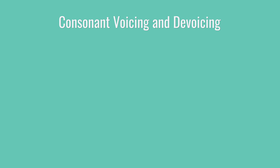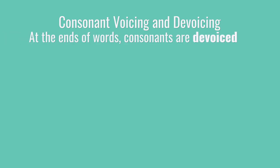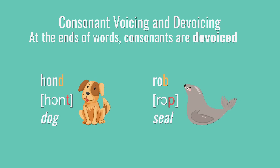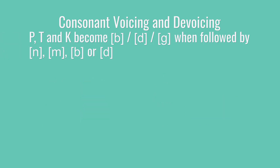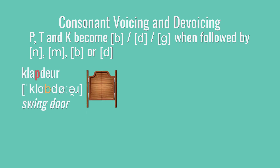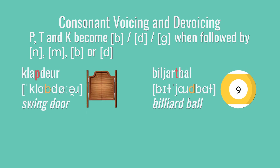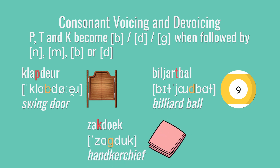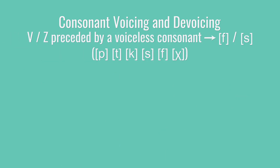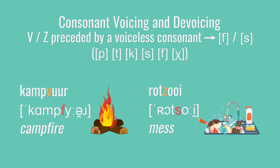And with that, we are all done with Dutch pronunciation. To quickly review, we began by talking about consonant voicing and devoicing. Specifically, we talked about three cases. One, if you see a voiced consonant at the end of a word, then you'll devoice it, giving you a t sound at the end of hond and a p sound at the end of rop. Second, we talked about how p, t, and k in the middle of a word can become voiced when the next sound is an n, or an m, or a b, or a d — giving you words like klapdeur with a b in the middle, billiardbal with a d in the middle, and zakdoek with a g in the middle. Third, we mentioned that a v or a z can devoice, turning into f or s, if they show up after a voiceless p, t, k, s, f, or ch. That gives you words like kampvuur and rotzooi.